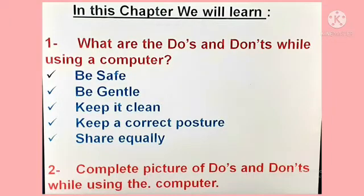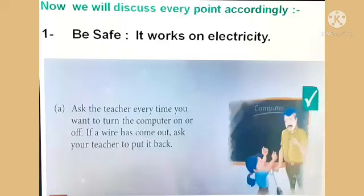In this chapter, we will learn the following points: First, what are the do's and don'ts while using a computer. The five points are: first, be safe; second, be gentle; third, keep it clean; fourth, keep a correct posture; fifth, share equally. We will also discuss the complete picture of do's and don'ts while using the computer, and then discuss every point accordingly.